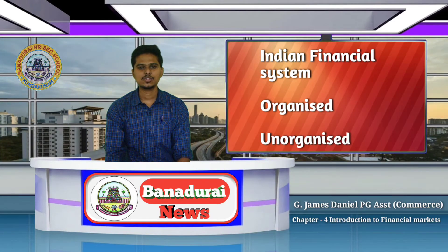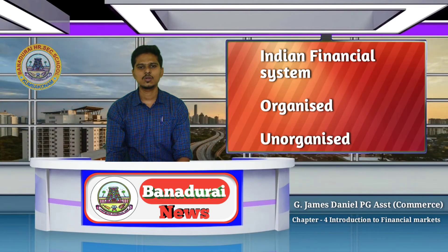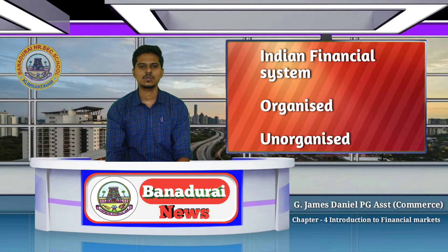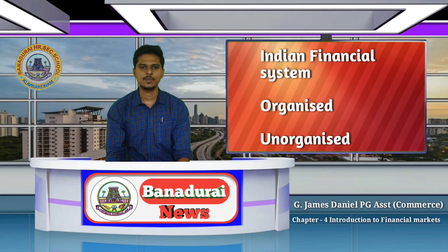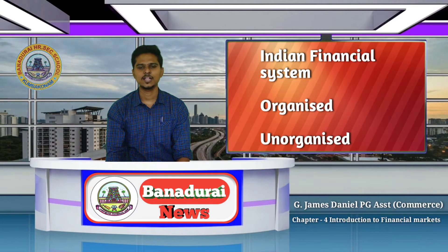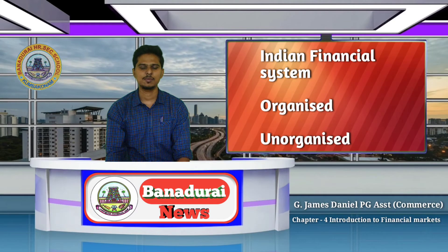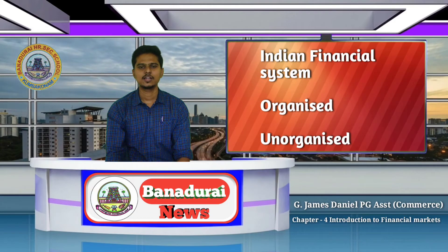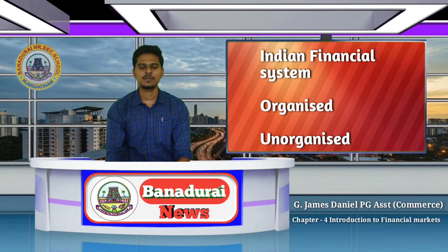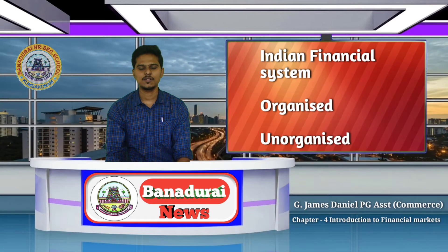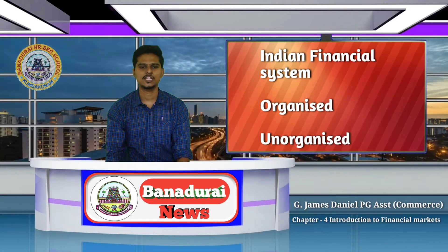The organized sector includes financial institutions and regulators. An example of a financial institution is LIC — the Life Insurance Corporation. This is a finance institution operating under government policy. Regulators are an example of the organized sector — they operate under government policy.